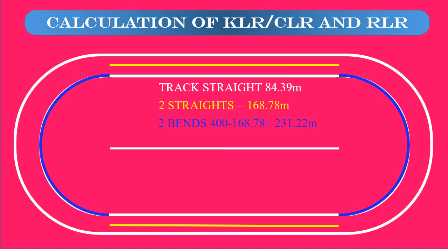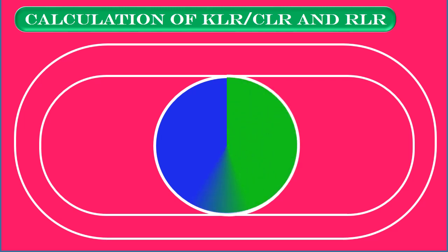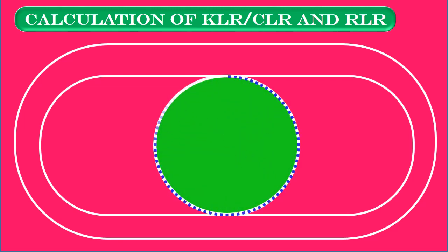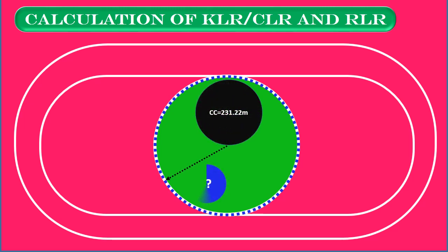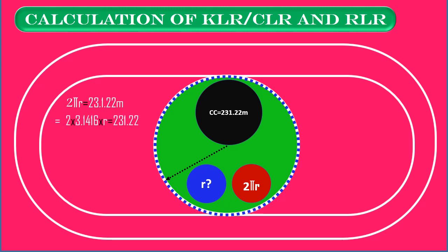Here we have to find out which radius will give a 115.61 meters semicircle circumference and 231.22 meters circle circumference. When we connect the two bends, we get a circle. The circle circumference is 231.22 meters. Using the formula 2πr: 2 into 3.1416 (the pi value suggested by World Athletics) into r equals 231.22. So 6.2832 into r equals 231.22, and r equals 231.22 divided by 6.2832. The answer is 36.799.